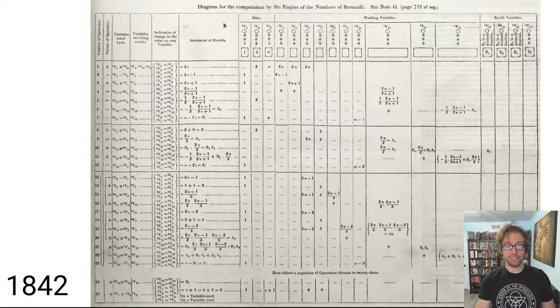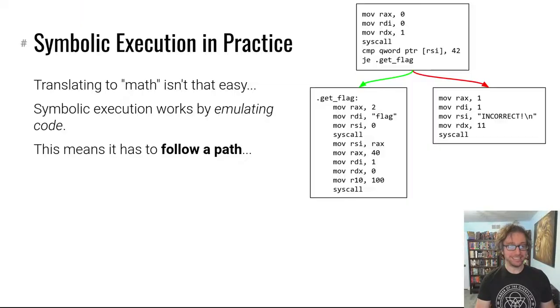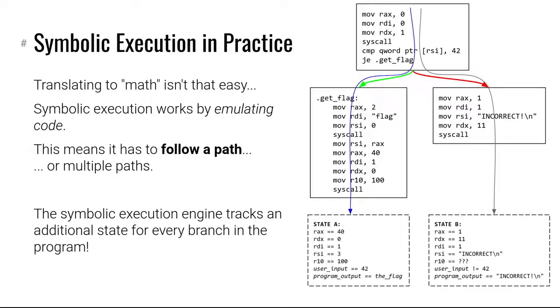Let's see what it's like today. Symbolic execution emulates code to convert it into math. This isn't easy. What we saw in that first slide was a kind of straight shot conversion. What actually happens is a lot more complex. Symbolic execution has to execute code in sequence like a normal CPU. The difference is it has an emulated state that it can mess with.